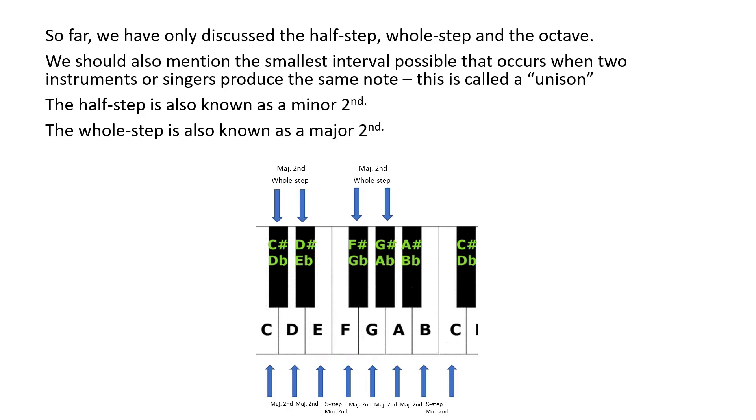We should also mention the smallest interval possible that occurs when two instruments or singers produce or sing the same note. This is called a unison.